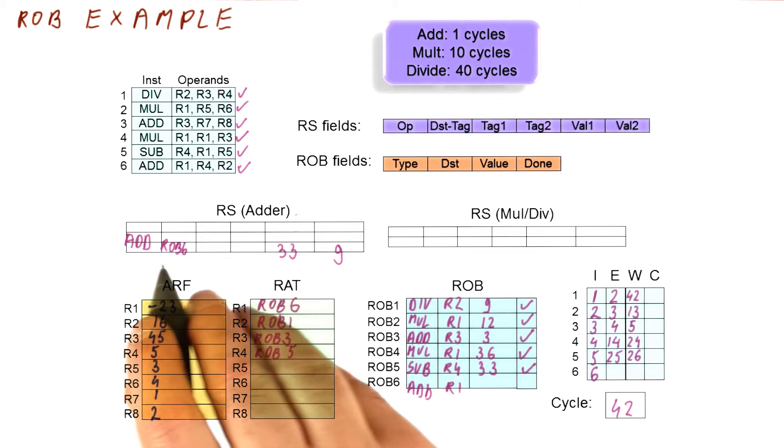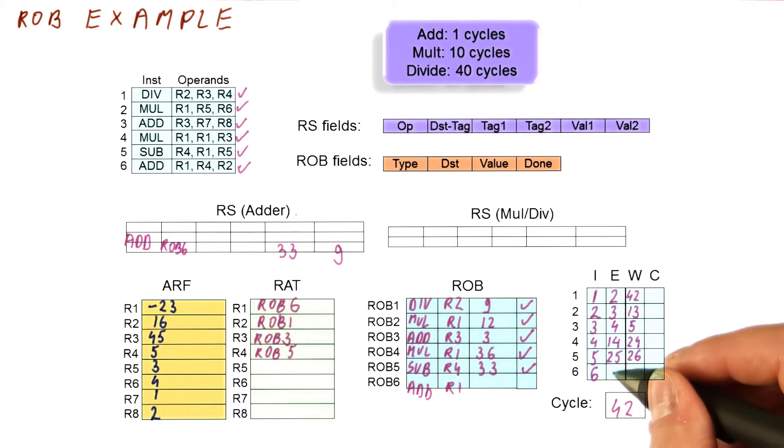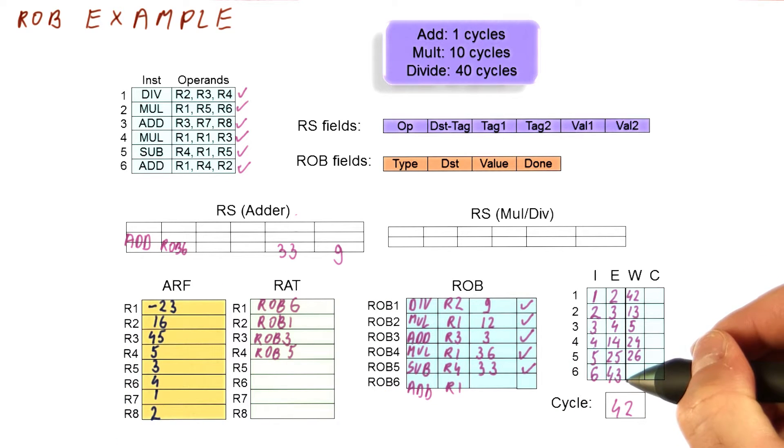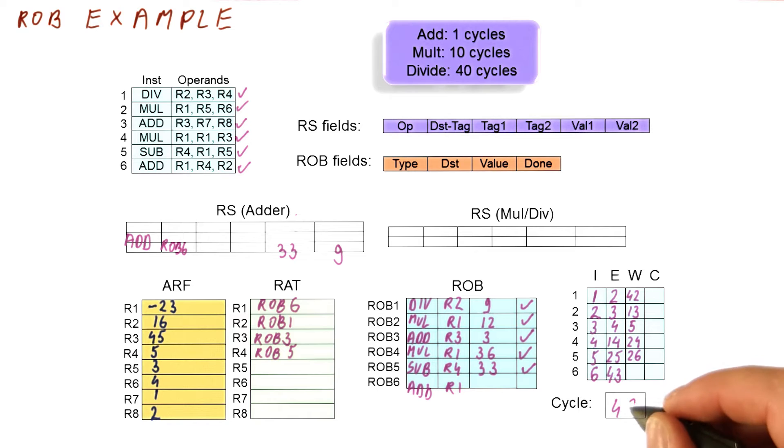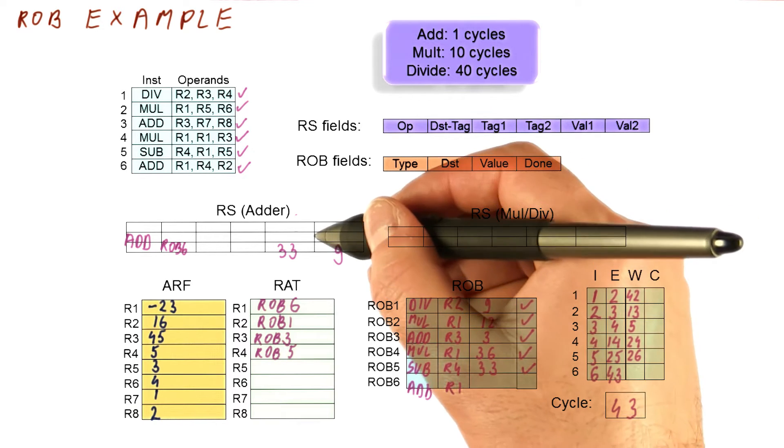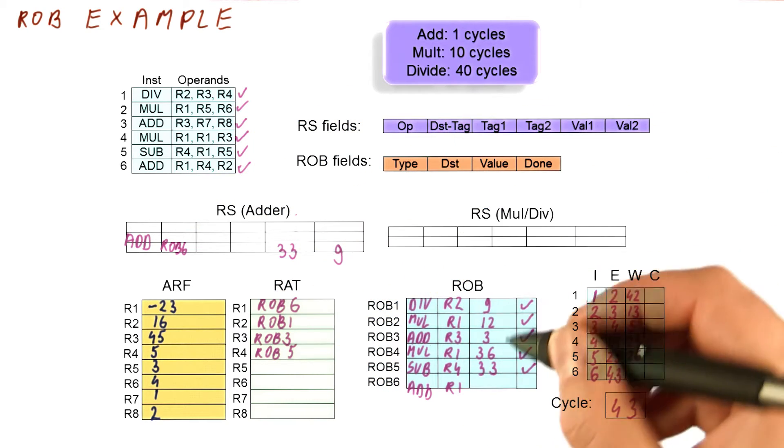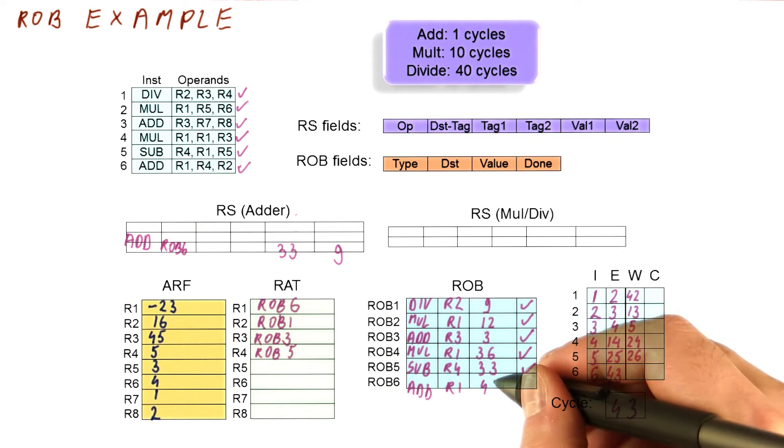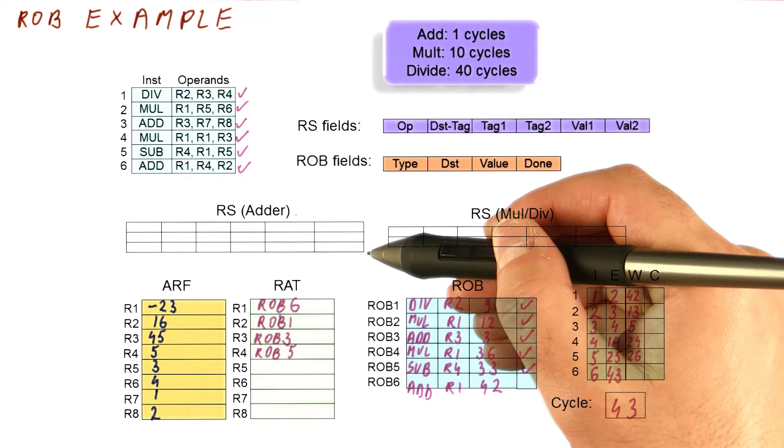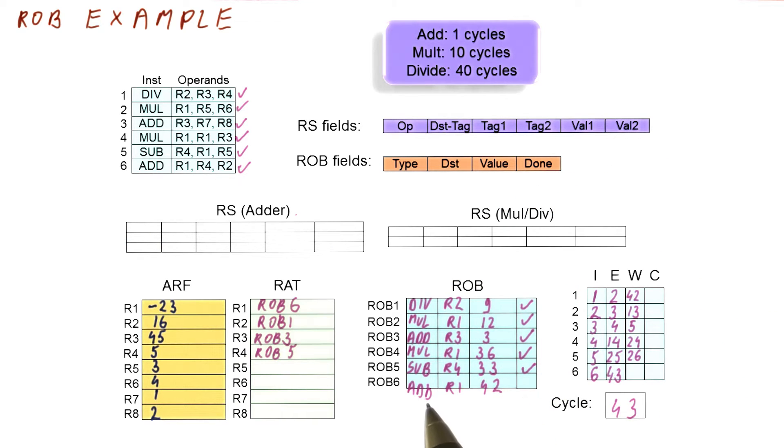So in cycle 43, finally this ROB6 instruction is going to begin execution. So with that, let's move to cycle 43. In cycle 43, we begin execution of this instruction. It's an add of 33 and 9, so we end up with a 42 value here. This reservation station is now free. This is an add, so it's going to finish in cycle 44.